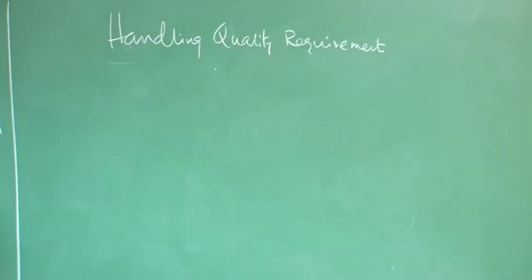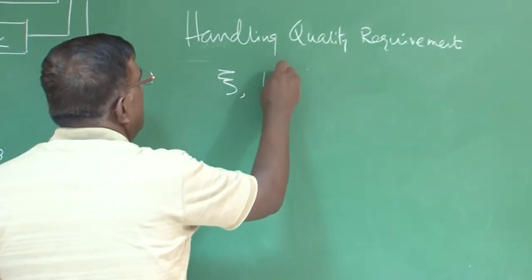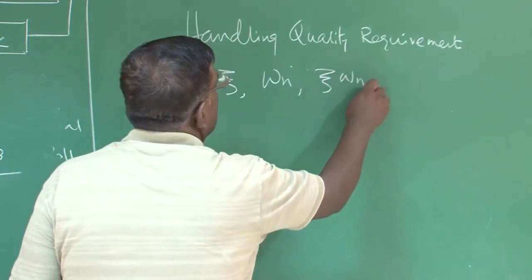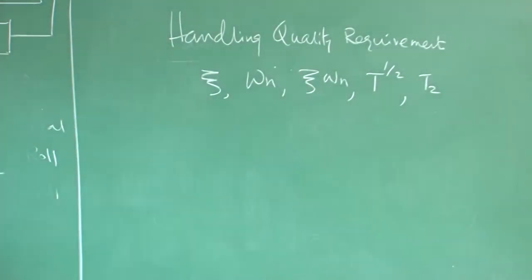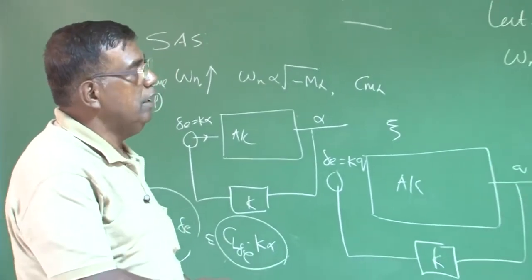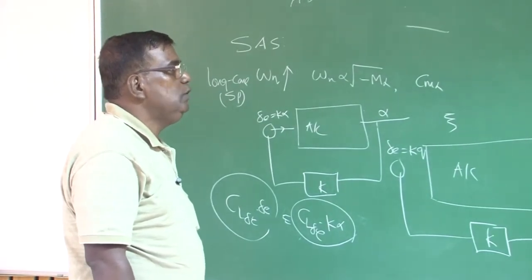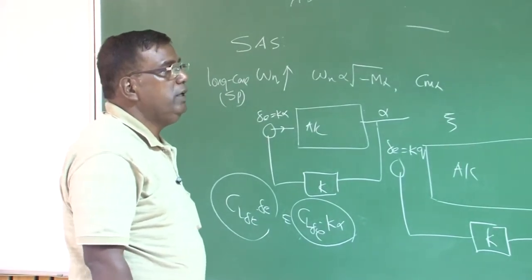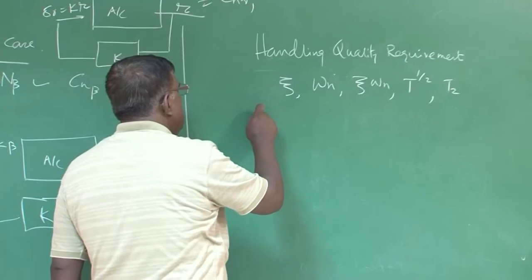And what is most interesting is, the requirements are postulated using zeta, omega_n or zeta omega_n together or time to half or time to double, right. So whatever we have done by doing approximation, our aim was to find out natural frequency, damping ratio, time to half, time to double - they are all required finally to meet the handling quality requirements.